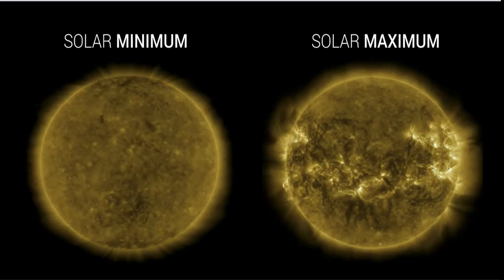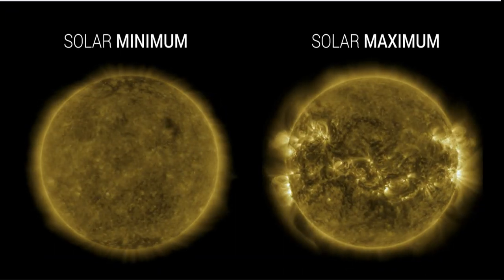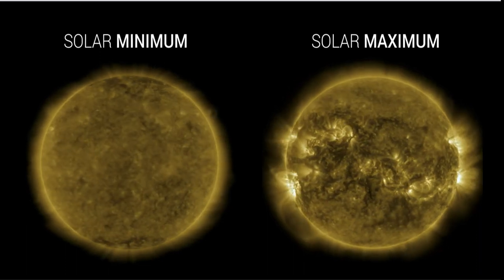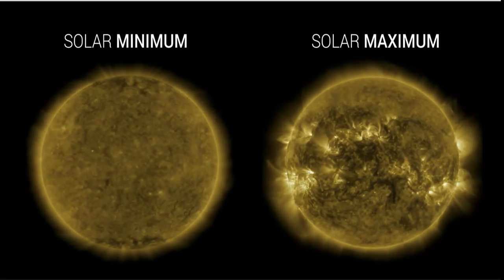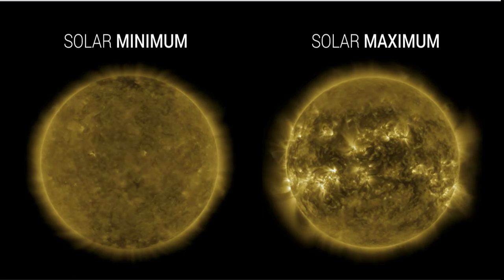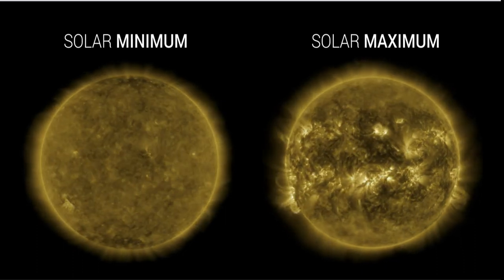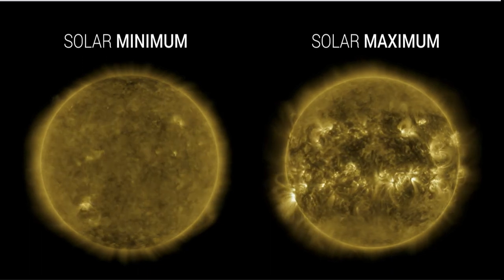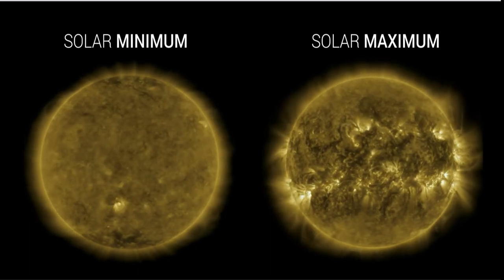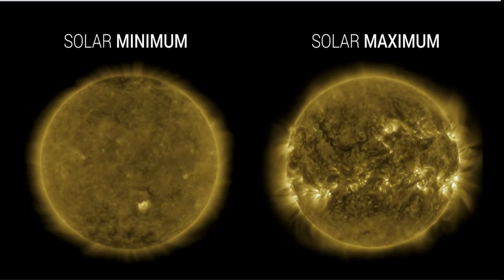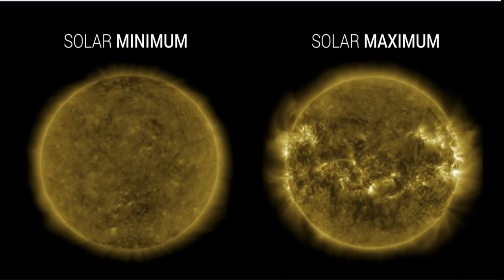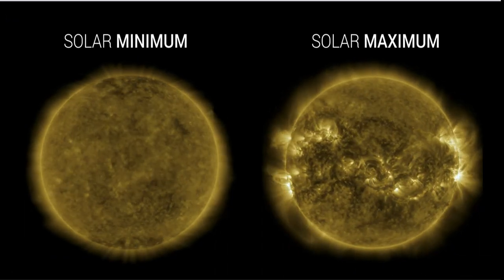You can see the big difference when you compare this to the right hand side. On the right, there is constant activity with two bands - one north of the equator and one south of the sun's equator. We see material being pushed out from the surface, the plasma being lifted off by the sun's magnetic field.